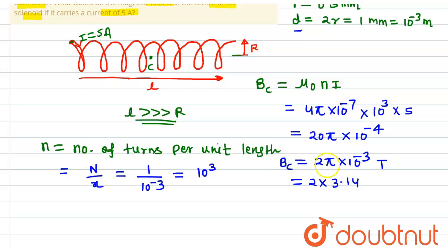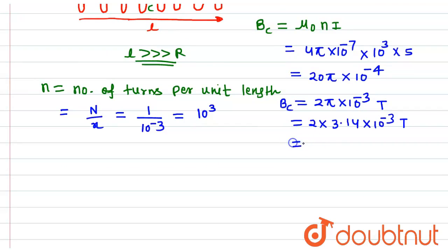Pi can be given as 3.14, so the magnetic field at the center of the solenoid is 2π times 10 to the power minus 3 Tesla, or 2 times 3.14, that will be 6.28.